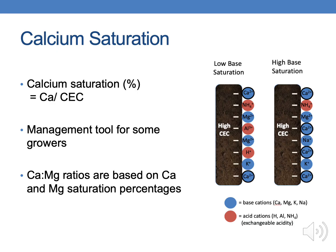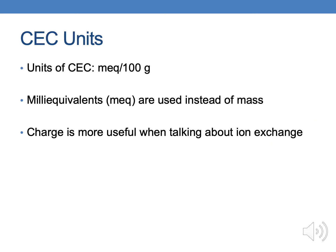CEC units are kind of an interesting beast. Technically, the unit you'll get on most soil tests is milliequivalents per 100 grams of soil. Milliequivalents are a measurement of charge and they're used instead of mass. If you look at percent organic matter, that's a mass of organic matter per mass of soil. With CEC, we're talking about charge per mass of soil. Charge is more useful when talking about ion exchange than a mass percentage, which is why we use this unit of milliequivalents per 100 grams — it's a charge per weight of soil.